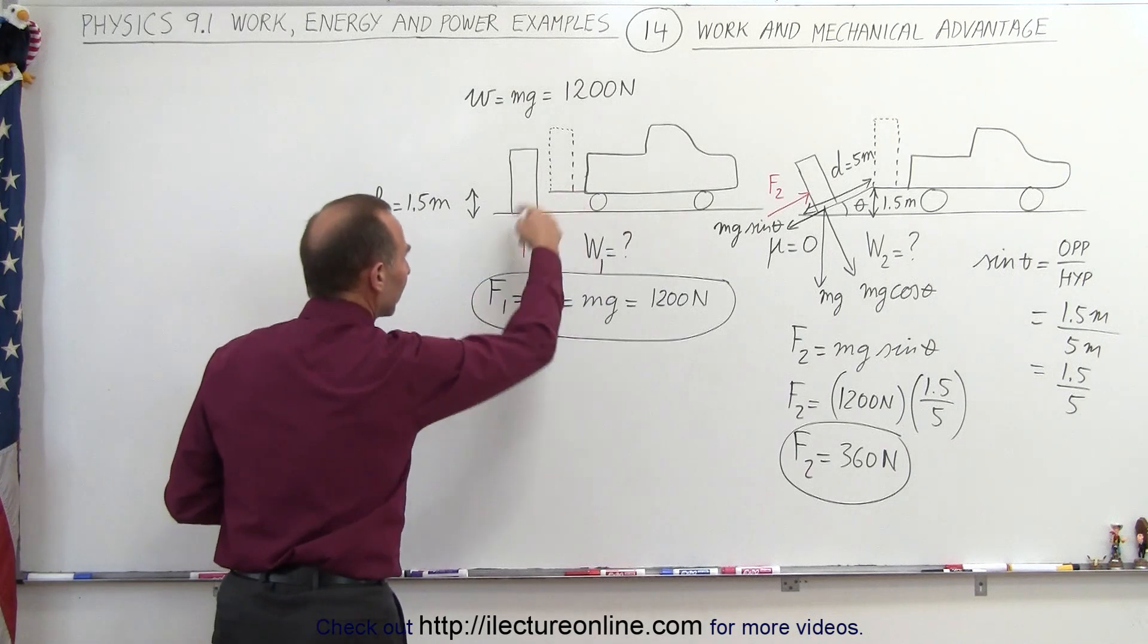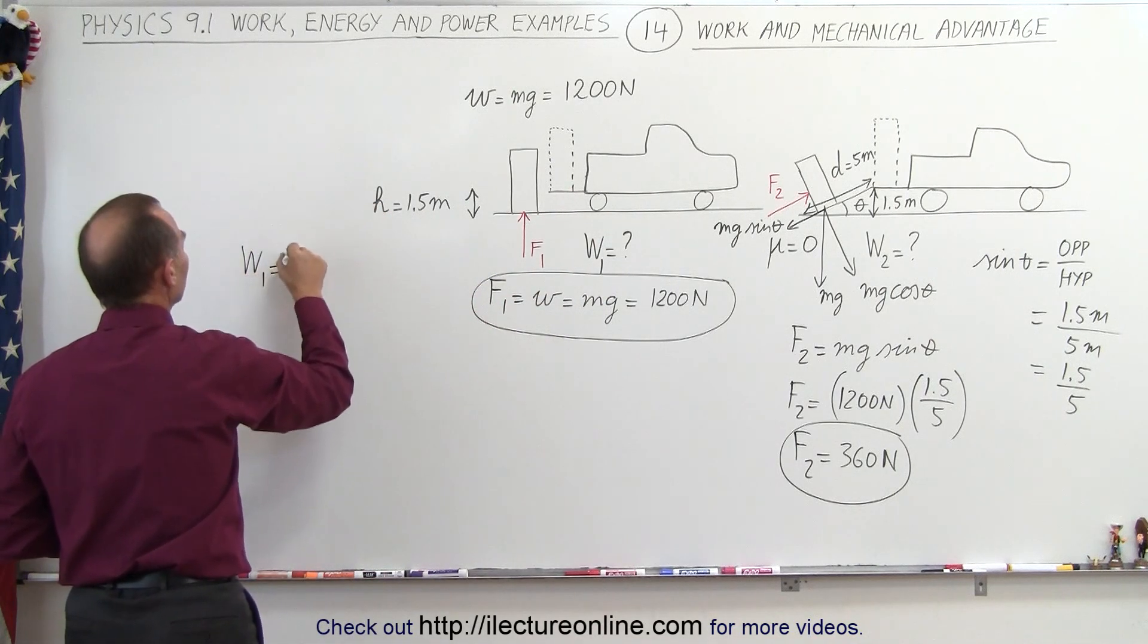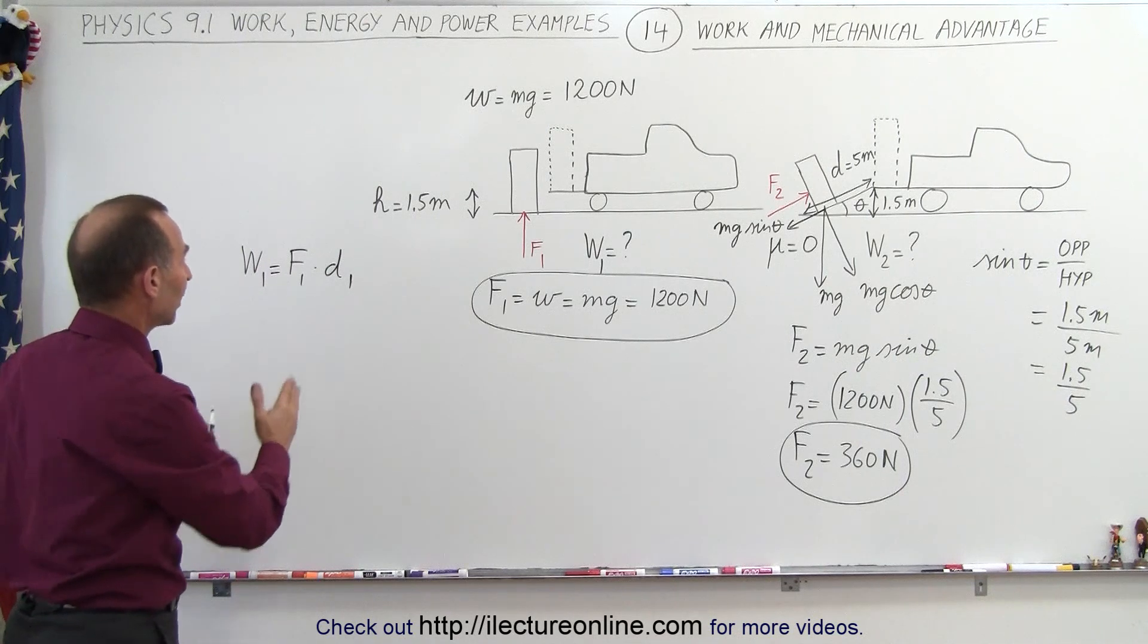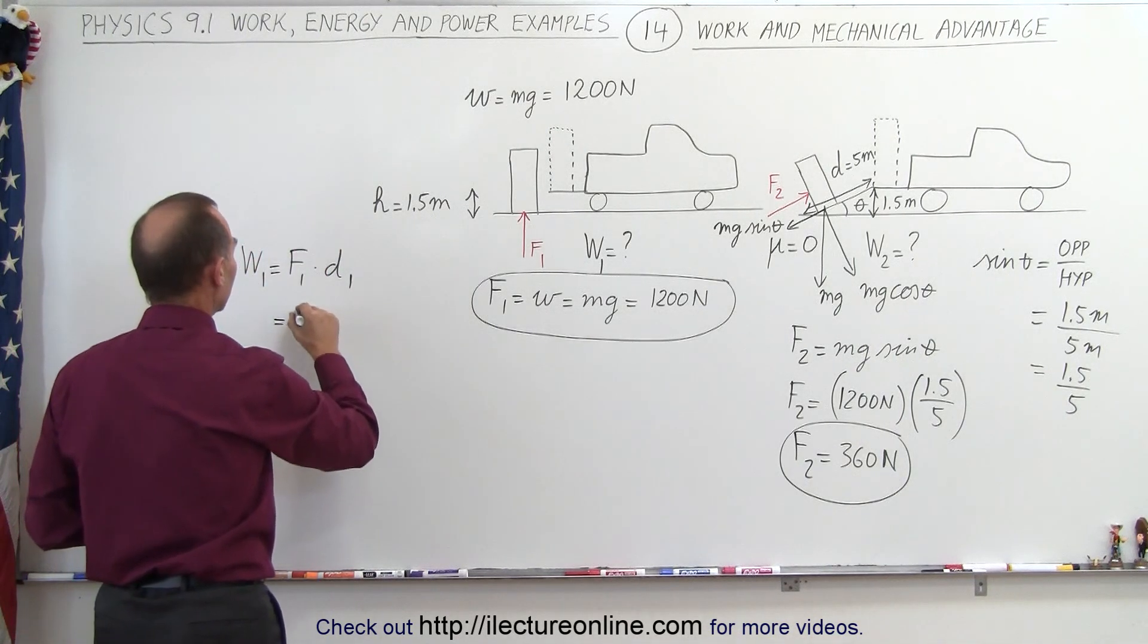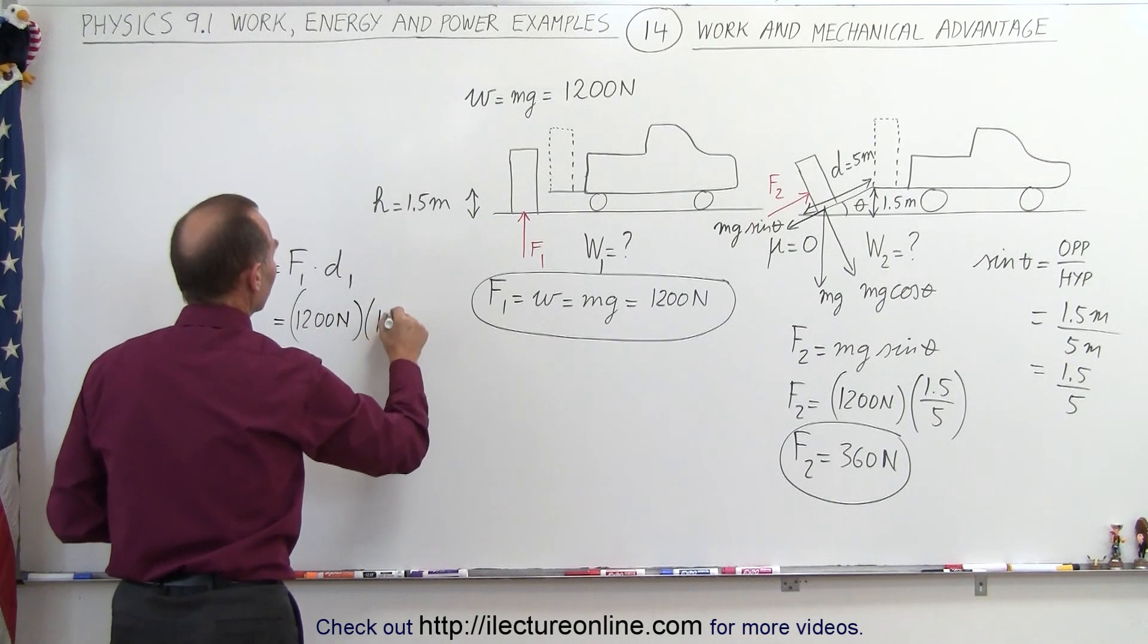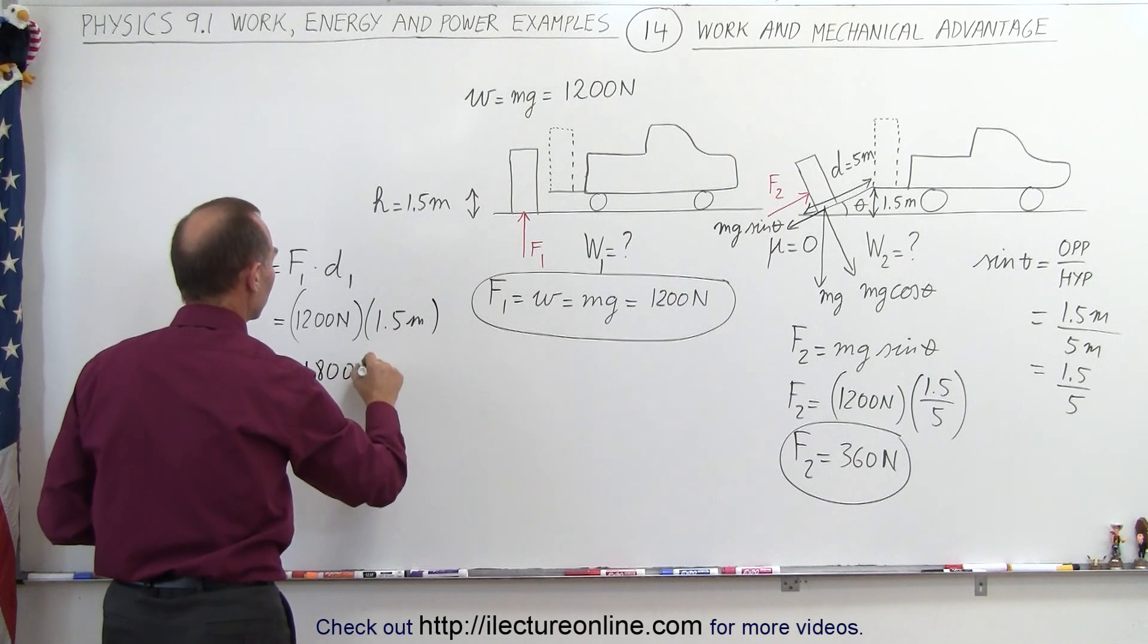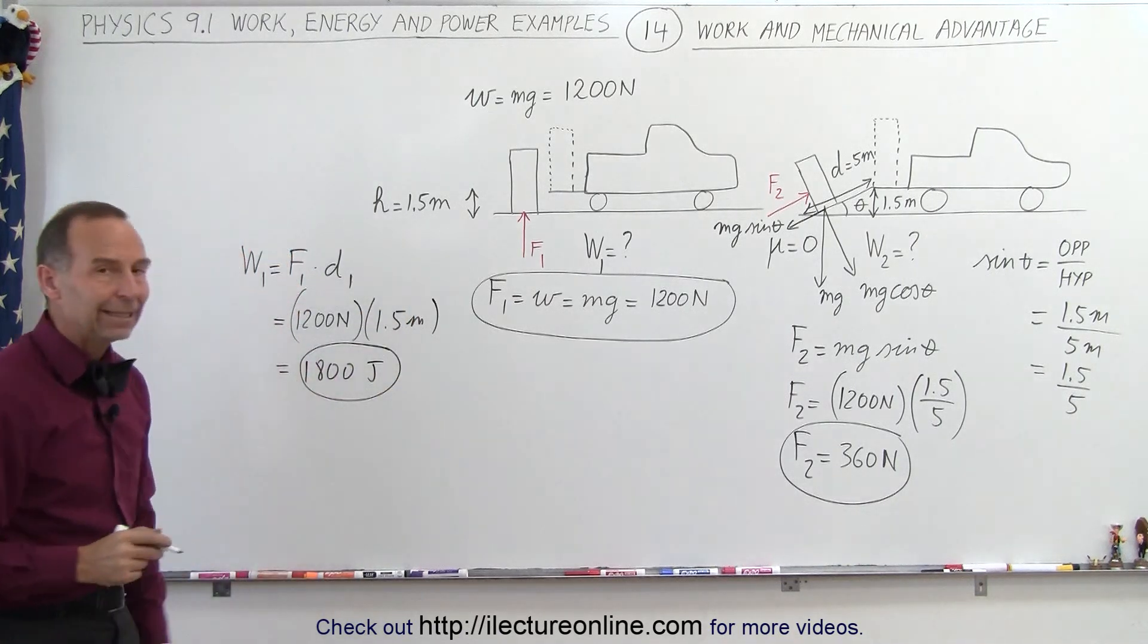The work in our method number one by lifting the refrigerator, work 1 is going to be equal to force 1 times the displacement. In this case the displacement will be lifting it straight up because you have to multiply the force times the displacement in the same direction. So in this case that would be equal to 1200 newtons times the displacement of 1.5 meters straight up. So that would be equal to 1800 newton meters which is joules. So the amount of work it takes to lift it straight up is 1800 joules.